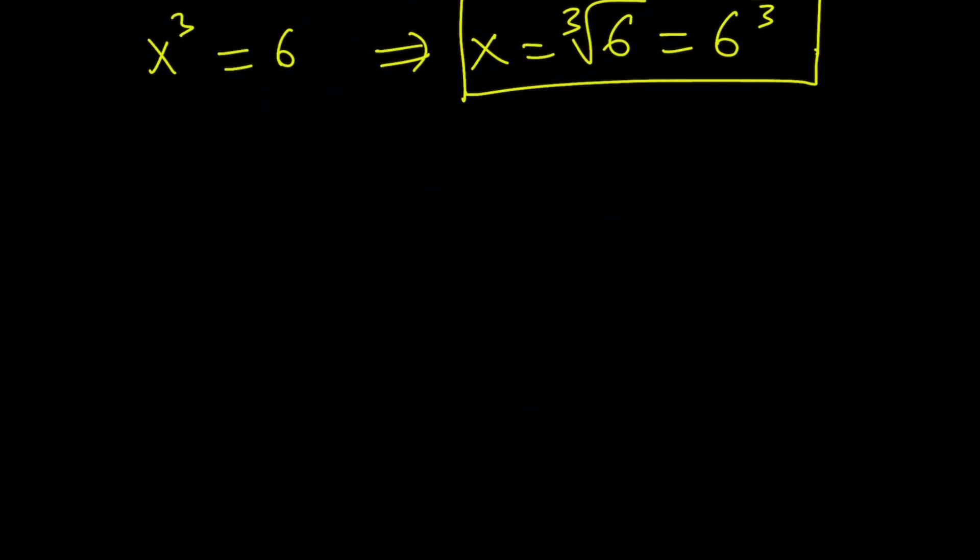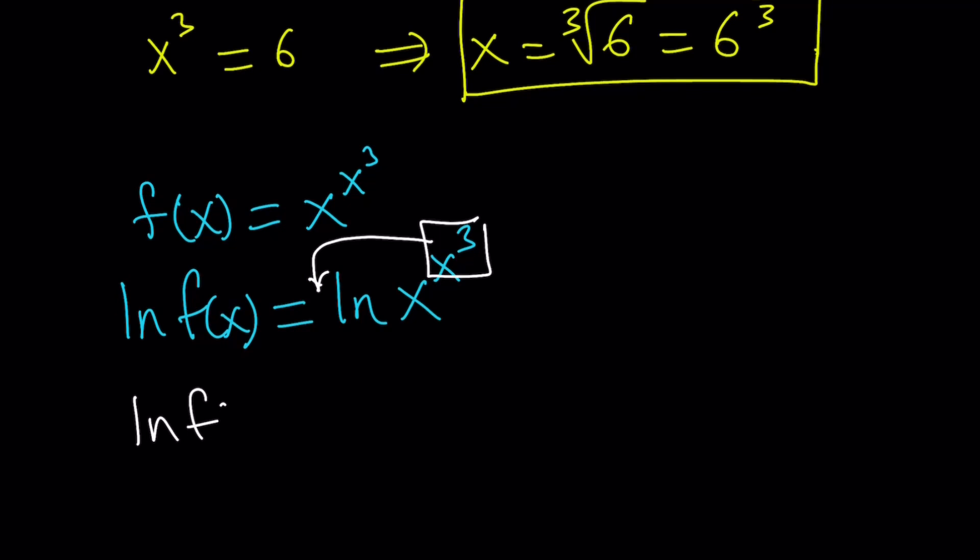Let's go ahead and do that. So suppose f of x equals x to the power x cubed. And now we're going to ln both sides. ln is natural logarithm, the base e thing. So we're going to do natural log of both sides because that's going to help us bring the exponent down. And I know some people do e to the power something. It's the same thing.